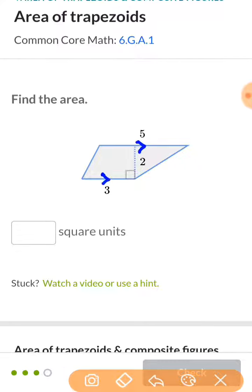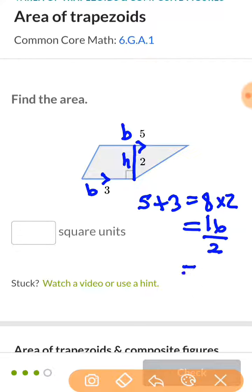Parallel sides are right here, so base and base. Five plus three is eight. Eight times two, which is the height, eight times two is sixteen. So there's your height right there to make a perpendicular line. Then you take half of sixteen, and sixteen divided by two is eight.